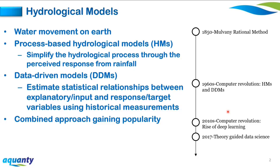Fairly recently in the 2010s, deep learning models — within the category of data-driven models — became computationally feasible. Deep learning models have shown similar or better predictive capabilities than process-based hydrologic models. Although these two approaches — HMs and DDMs — have primarily advanced independently, there is increasing interest in combining them to achieve predictive performance beyond what individual models can achieve.